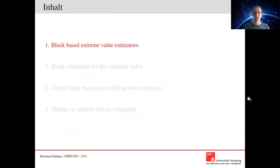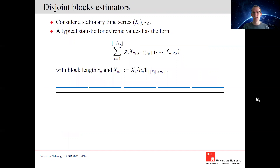To start with, I want to introduce some general block-based estimators for extreme value statistics. We consider a stationary time series x, illustrated here by the black line. A typical form of an extreme value statistic is a disjoint block statistic, where we divide our time series into disjoint consecutive blocks — the blue blocks here — take from all these blocks only the extreme observations, i.e., those x_i which exceed our threshold u_n, standardize again with our threshold, apply some arbitrary function g on all extreme observations of one block, sum it up over all blocks, and then suitably standardize. This way we get this general extreme value statistic.